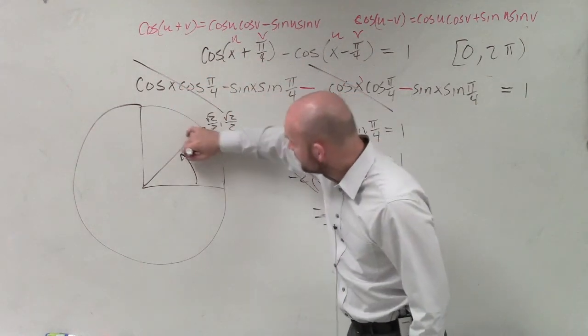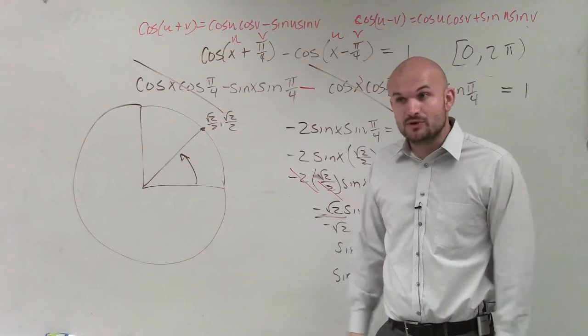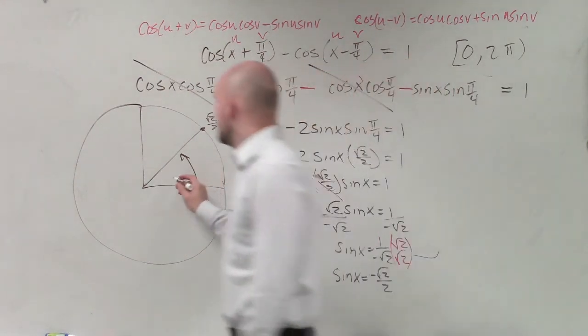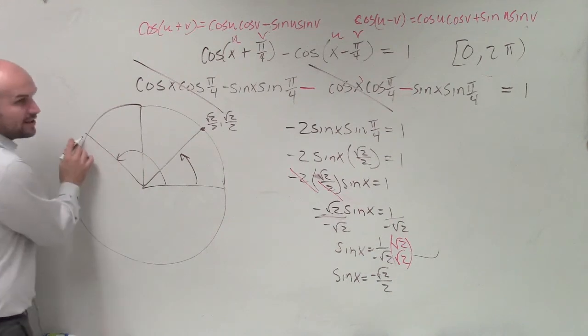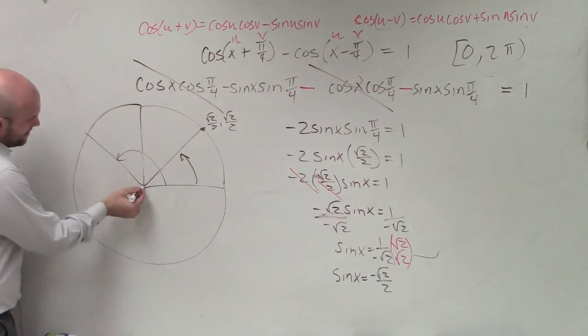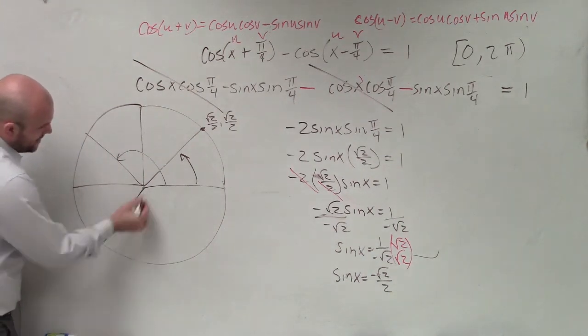Well, we know at pi over 4, it's positive square root of 2 over 2, right? Pi over 4, 2 pi over 4. At 3 pi over 4, my y-coordinate is still going to be positive. But then if I go down here and down here, I'm going to have two points where it's going to be negative, right? Because the y-coordinate is negative in the third and the fourth quadrant.